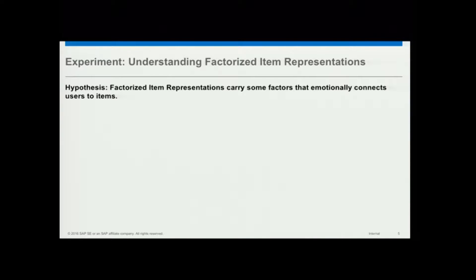What was interesting to me was to find out what these latent factors actually tell you. That led us to this experiment about understanding the factorized item representations. We have a hypothesis: factorized item representations carry some factors that emotionally connect users to items. Maybe there's an emotional connection between the users and items, and that information is there in those factors.